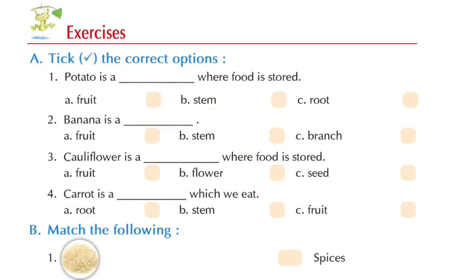Children, which is the correct option? Yes, option B, stem. Children, which is the correct option? That's right, option A, fruit. Banana is a fruit.